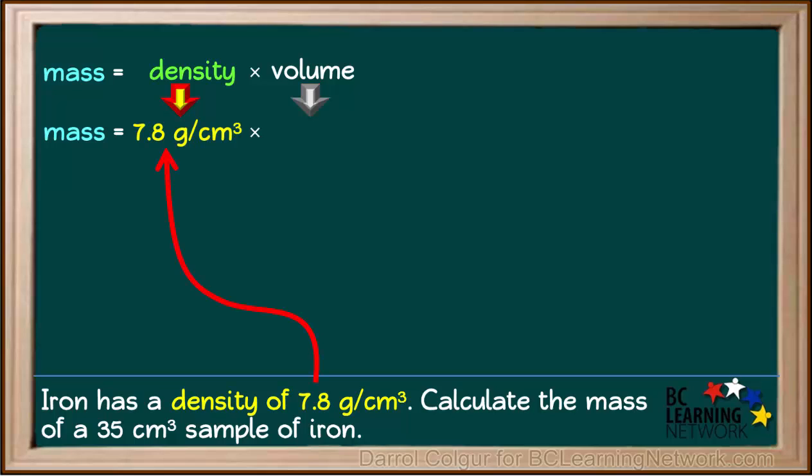We substitute 7.8 grams per cubic centimeter for the density because that was given in the question, and we substitute 35 cubic centimeters in for volume as that is also given.